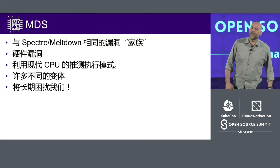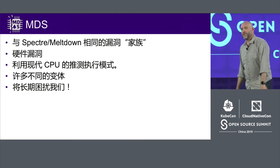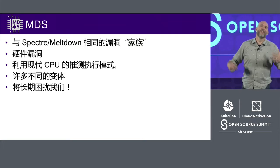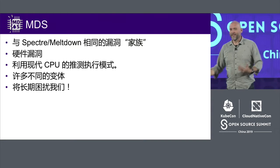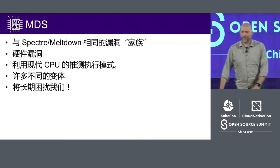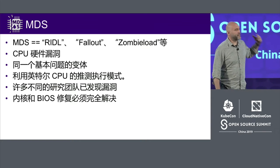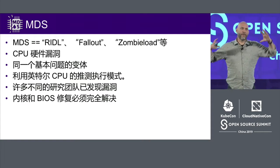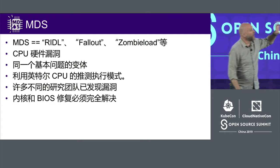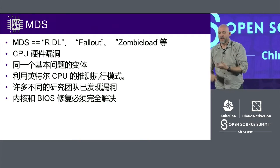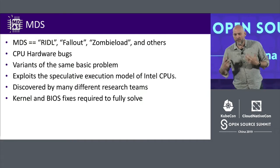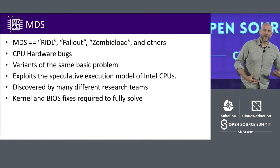Spectre and MDS exploit the fact that CPUs look ahead into the future — they try to figure out what's going to happen next, then roll things back. When they don't roll things back properly, you can leak information. There are lots of different variants because CPUs are very complex. Like I said last year, it's going to be with us for a long time — we will be dealing with this even longer. MDS is the generic name for this category: there's RIDL, Fallout, Zombieland, and a few other names. These are all CPU hardware bugs.